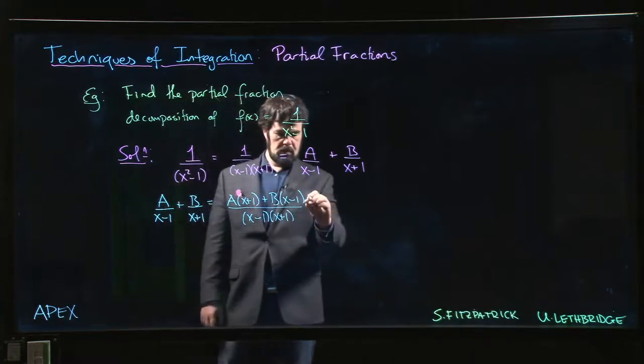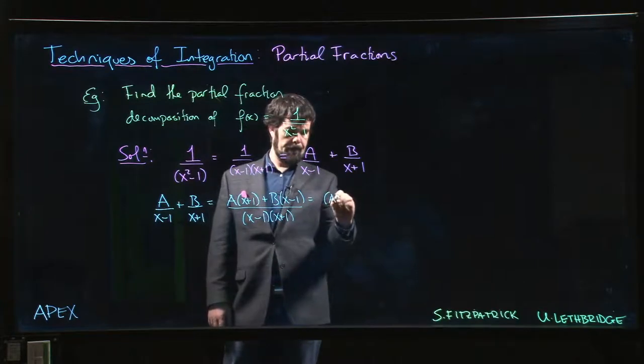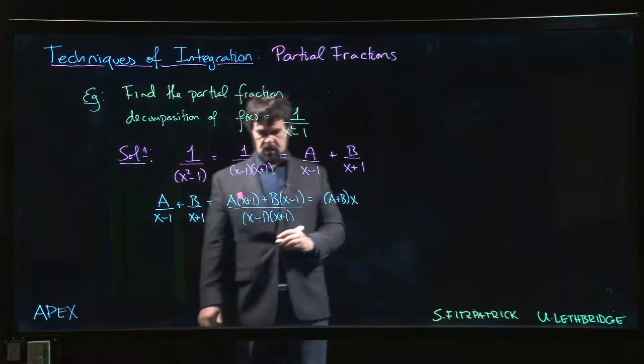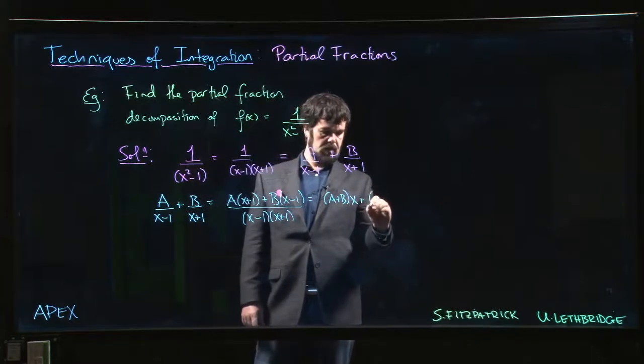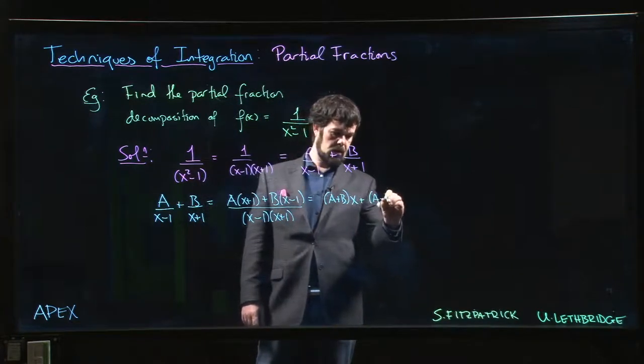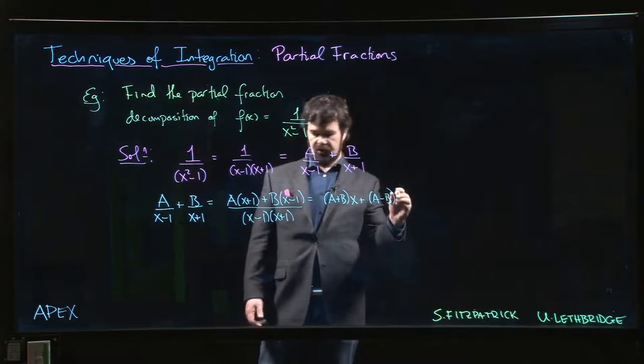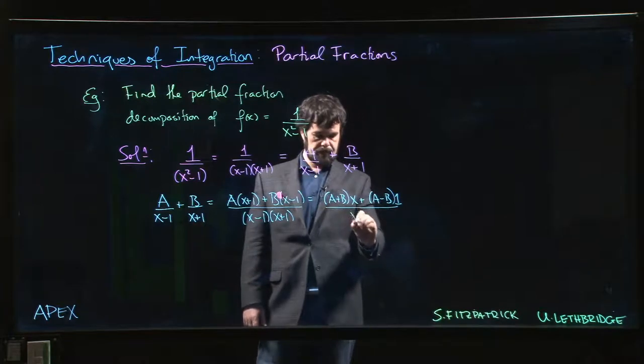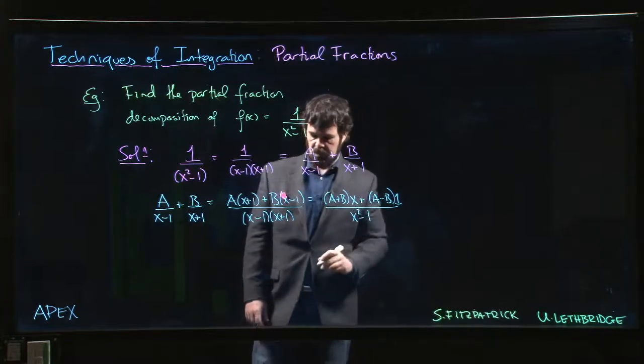Okay, so this is A plus B times x, and then it's A minus B as a constant term, times 1 if you like, divided by x squared minus 1.